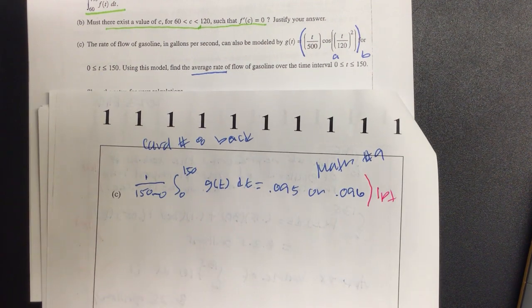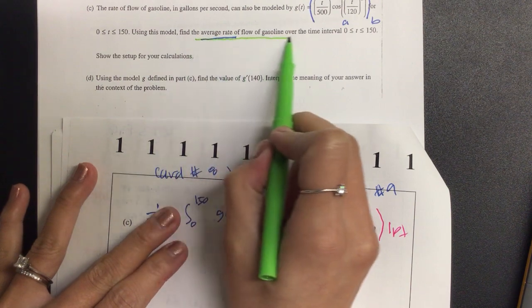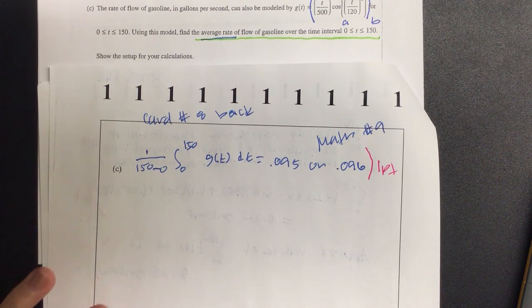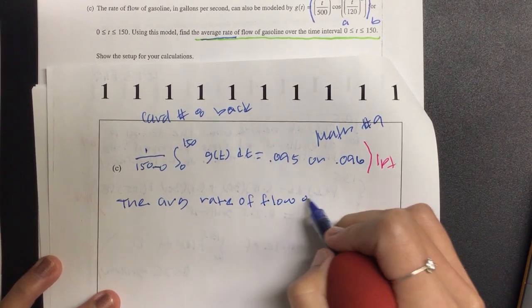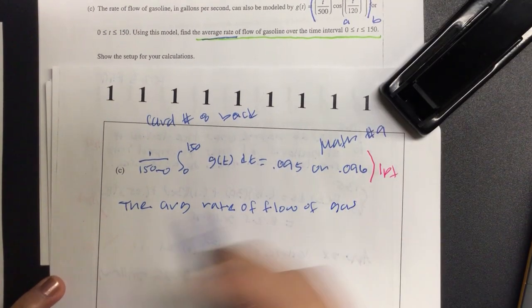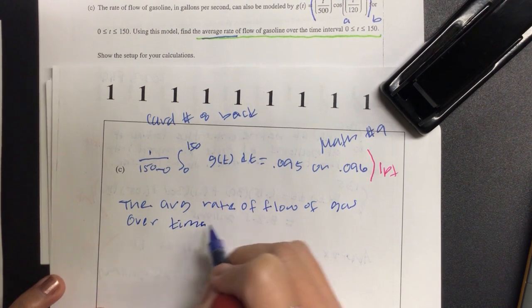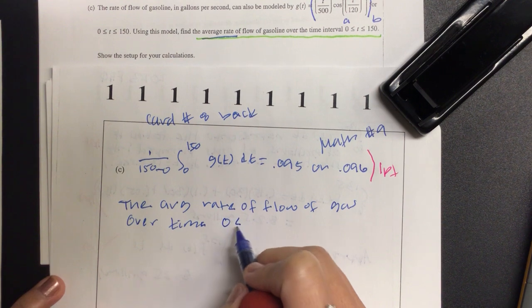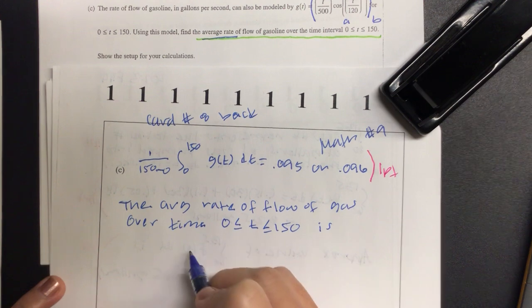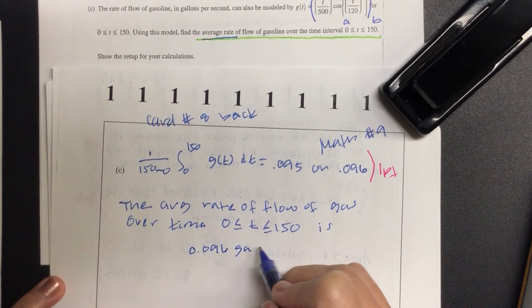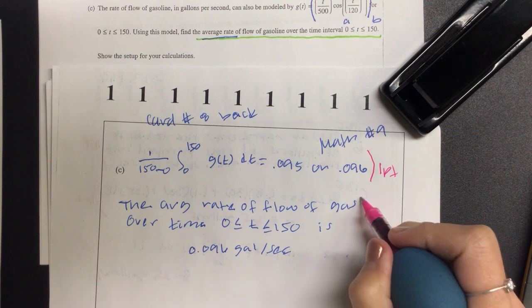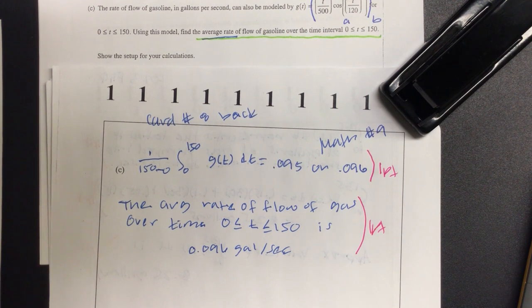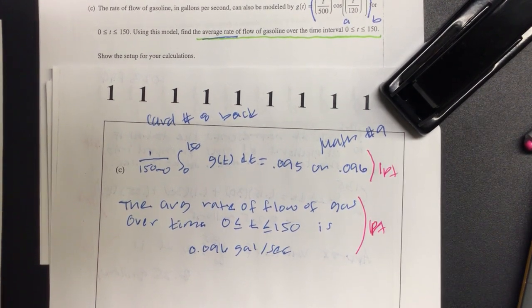And then I'm going to take the sentence stem from here. All of that. The average flow, blah, blah, blah, blah, blah. And then I'm going to say is whatever I got. So let's copy it. The average rate of flow of gas over time. I think an interval I'm not going to write out because I am going to give the interval specifically. 150 is 0.096 gallon per second. If you mess up on the unit on this one, and even though you have everything right, they're not going to give you credit for this. The unit. I know it is. But it's pretty easy to do, though. Again, should these two be easy check mark? Yeah. Very easy.